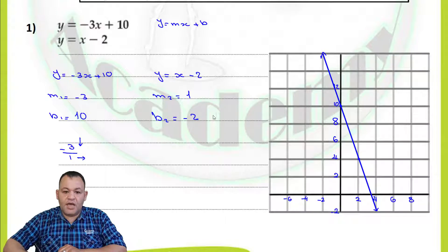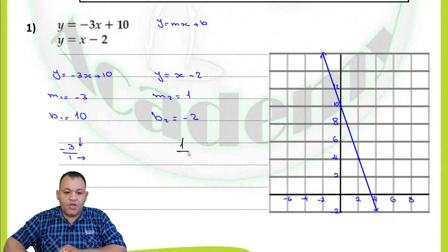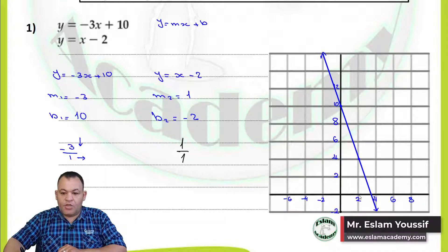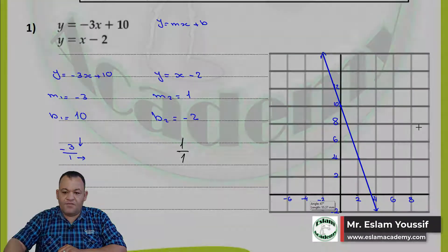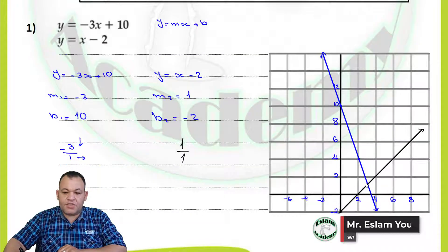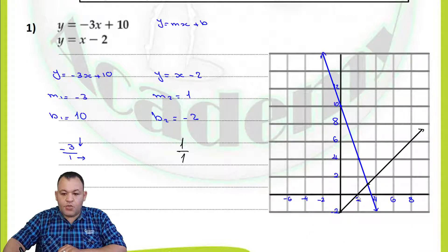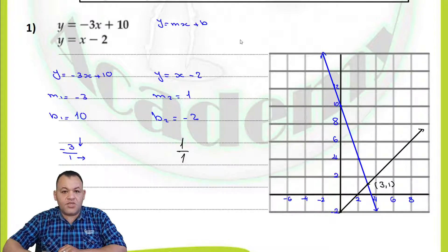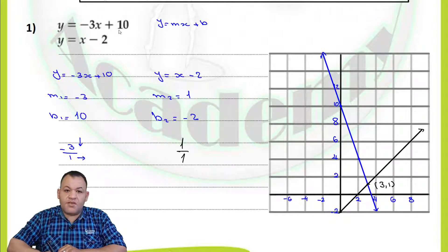For the second line, we start from the y-intercept at negative 2. The slope equals 1, which means 1 over 1 — rise 1 and run 1 — so we go 1 up and 1 to the right. You will find that the two lines intersect at one point with coordinates (3, 1). So the solution is (3, 1). By substituting into the first equation and the second equation, you will find that the left-hand side equals the right-hand side.